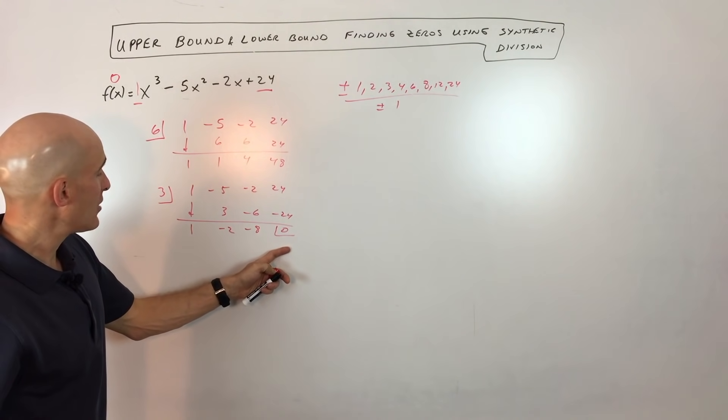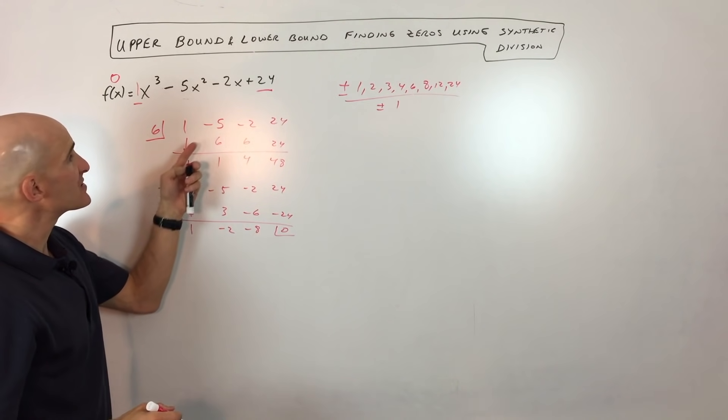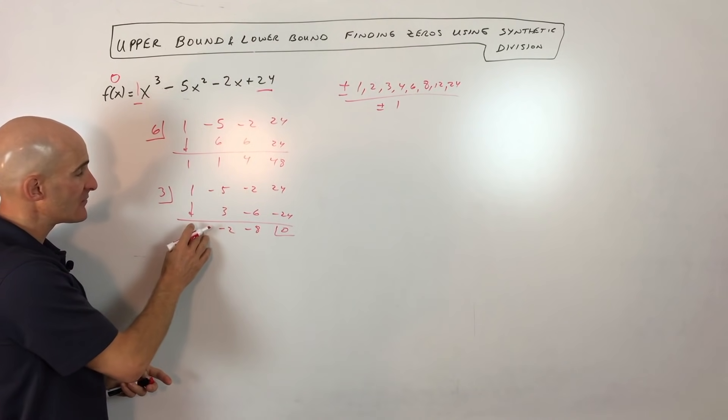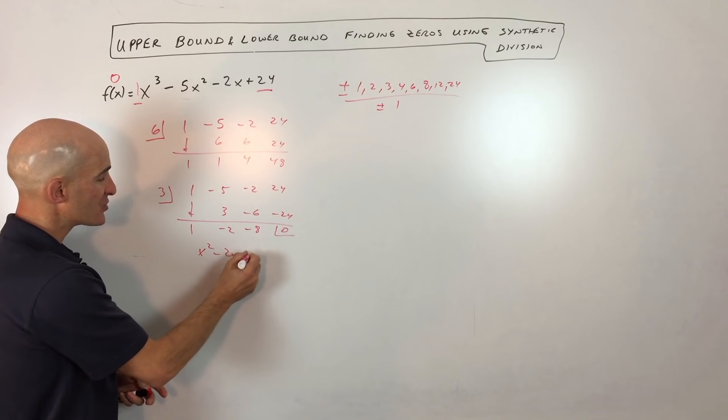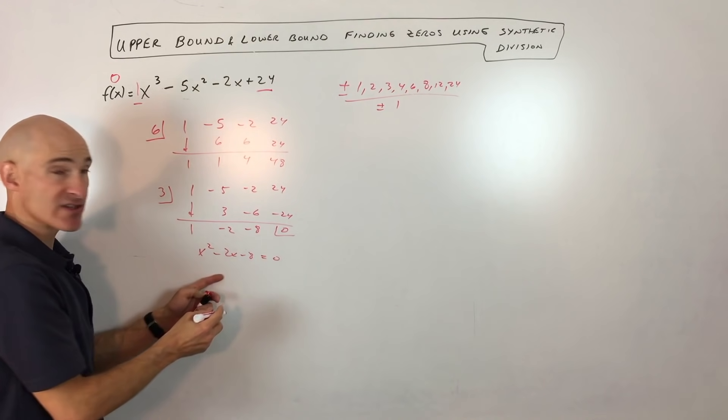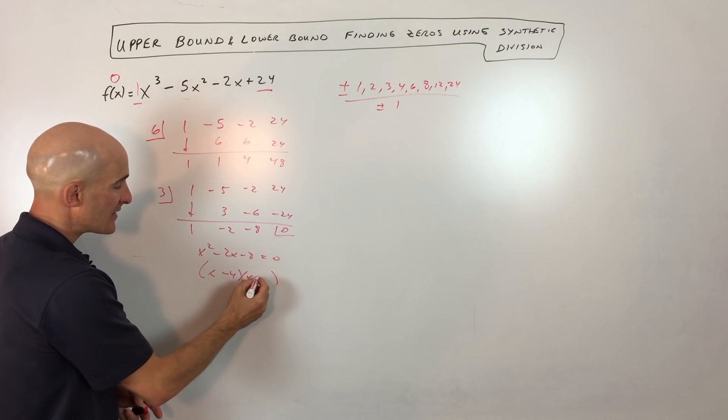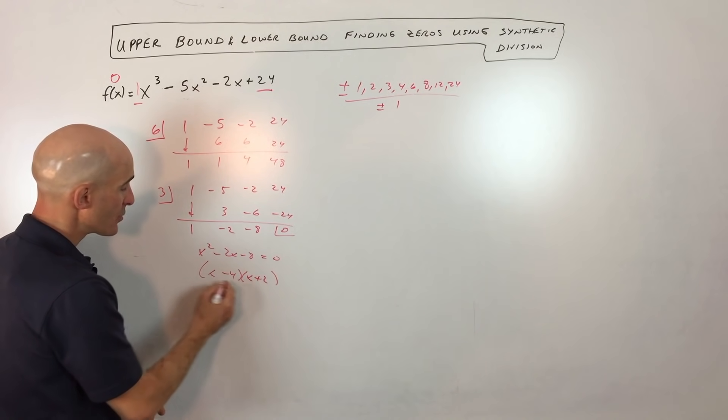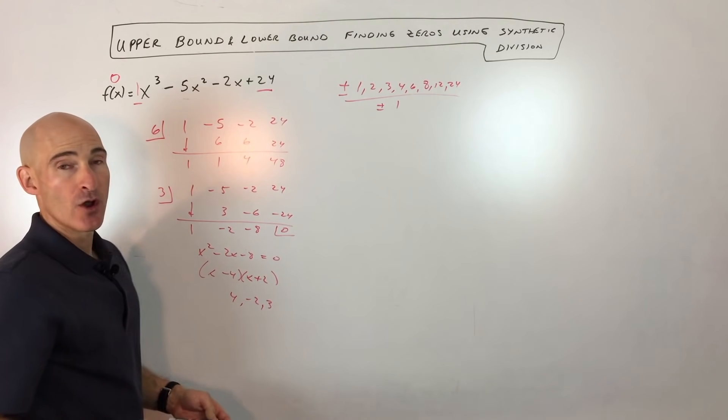So what that tells us is that three is a zero. And we brought this down from a cubic to a quadratic. When you do the synthetic division, that brings this down by one degree. So now we're down to x squared minus 2x minus eight equals zero. And we can factor this, and set the factors to zero. So you can see it's going to be positive four, negative two, and three.